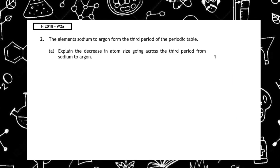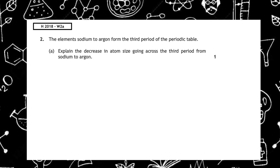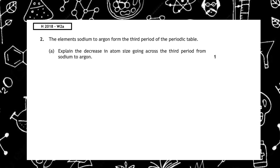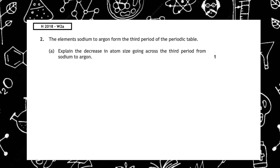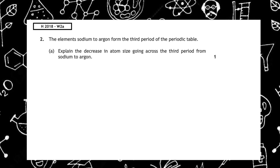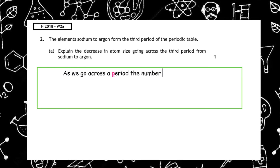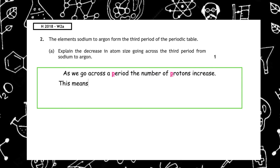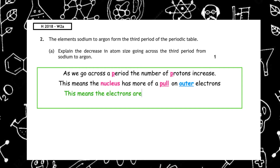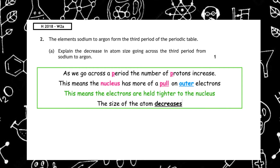This past paper question is from the Higher 2018 paper, written question 2a: 'The elements sodium to argon form the third period of the periodic table. Explain the decrease in atom size going across the third period from sodium to argon.' As we go across a period, the number of protons increases. This means the nucleus has more of a pull on outer electrons, the electrons are held tighter to the nucleus, and the size of the atom therefore decreases.